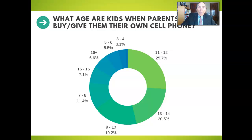Regarding cell phones, parents expose their children at an early age. 40% of parents let their child, six years of age or younger, use a cell phone. So when do parents allow their child to own a phone? 40% of U.S. parents let their child own a phone by the age of 10, with only 4% of parents permitting their child to own a phone by four years of age.